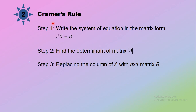The second method in solving a system of linear equations is by using Cramer's rule. First step, write the system of equations in the matrix form AX equals B. Second step, find the determinant of matrix A. Third step, replace a column of matrix A with the N by 1 matrix B.